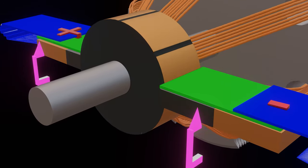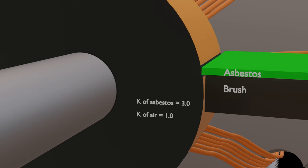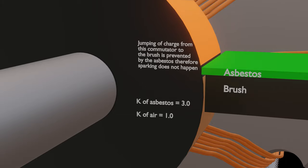Thus sparks were prevented. The sparking was stopped because insulating material like asbestos has a high dielectric constant. Asbestos has a dielectric constant of 3, and air has a dielectric constant of 1. Therefore, asbestos acted as a barrier and prevented the charge from the commutator from jumping to the brush. In this way, Nikola Tesla stopped the sparking of commutators by his simple design.